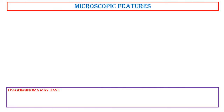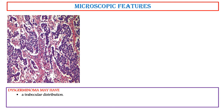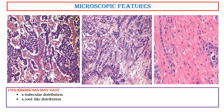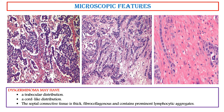This germinoma may have a trabecular or cord-like distribution. The septal connective tissue is thick, fibrocollagenous, and contains prominent lymphocytic aggregates.